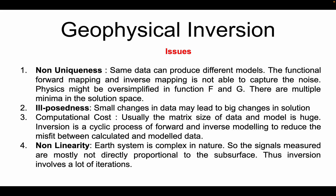There are many issues when we are trying to reduce this misfit between calculated data and observed data. The first is non-uniqueness — the same data can produce different models. For example, we might see a scatterer in the subsurface at a particular location, which the data will show. But at the same time, if we shift the scatterer to some other location, we might see that the data does not change much with the change in location of the scatterer.